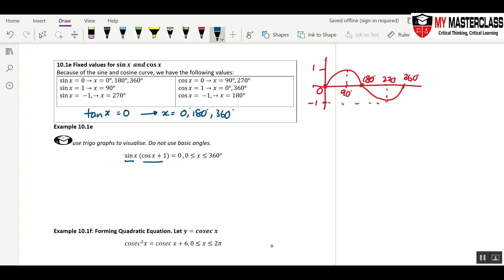Now, if this times this is equal to 0, what does it mean? It means that sine x equals to 0, or cos x equals to negative 1. Sine x equals to 0, so immediately plug in the value 0, 180, 360.